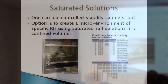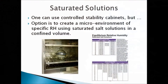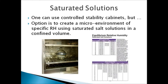Using saturated potassium chloride in the reservoir, for example — there are physical property tables where you can find a combination of salt and temperature to get the desired humidity. Saturated potassium chloride gives you 80% humidity at 55°C, and that's how you can stress a sample under controlled humidity conditions.